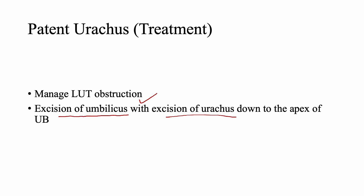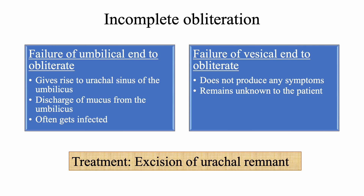If there is failure of the umbilical end to obliterate, it gives rise to a urachal sinus of the umbilicus — the umbilical end remains patent, forming a sinus. Through this sinus, discharge of mucus through the umbilicus can be seen, and it often gets infected. If there is failure of the vesical end to obliterate, it does not produce any symptoms and remains unknown to the patient — it remains as a diverticulum.